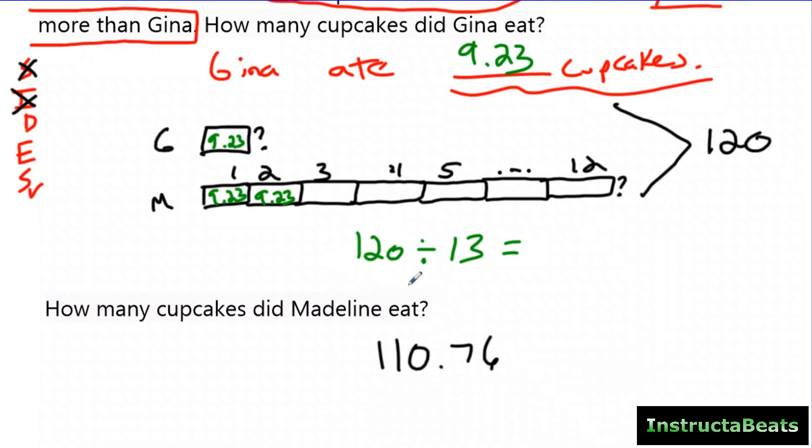So understanding how to manipulate these tape diagrams is going to lead your students to figuring out what you're doing. Because really, this wasn't a division problem. This was a multiplication problem. You wanted 13 groups of something that equaled 120. And then to solve it, you had to rewrite it as division. So you're constantly talking about inverse operations, which is going to help them when they get to algebra.